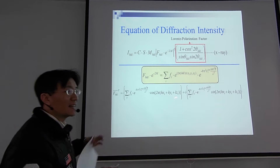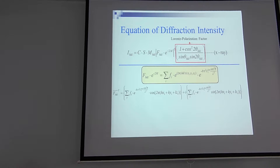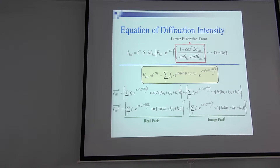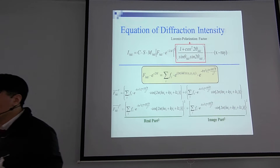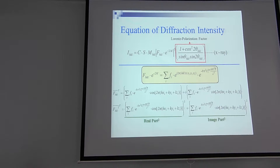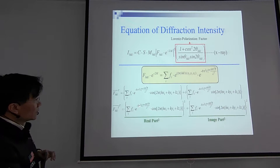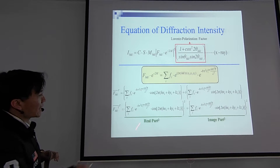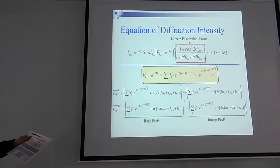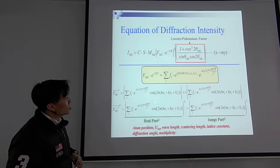For computer calculations, it is not possible to let the computer recognize complex numbers directly, so we need to convert them. We convert the complex exponential e^(i2π·hkl·xyz) into cosine and sine terms. So the exponential e^(i2π(hx + ky + lz)) becomes cosine(2π(hx + ky + lz)) — that is the real part — and the sine term is the imaginary part. Furthermore, we need to calculate the intensity, which is proportional to the square of the structure factor, so we take the power of 2 on both sides.